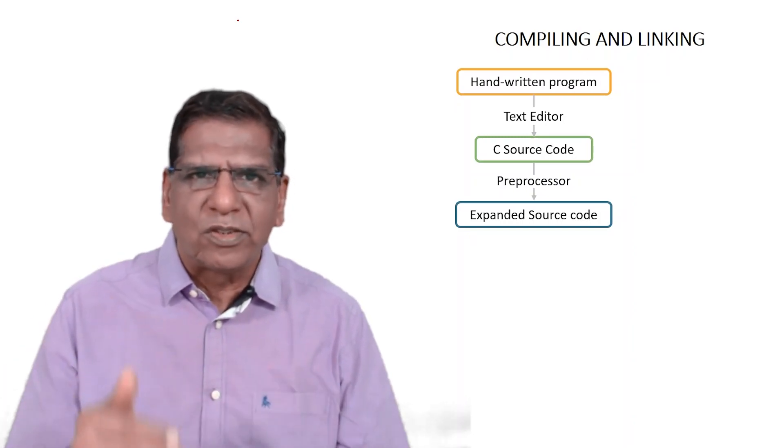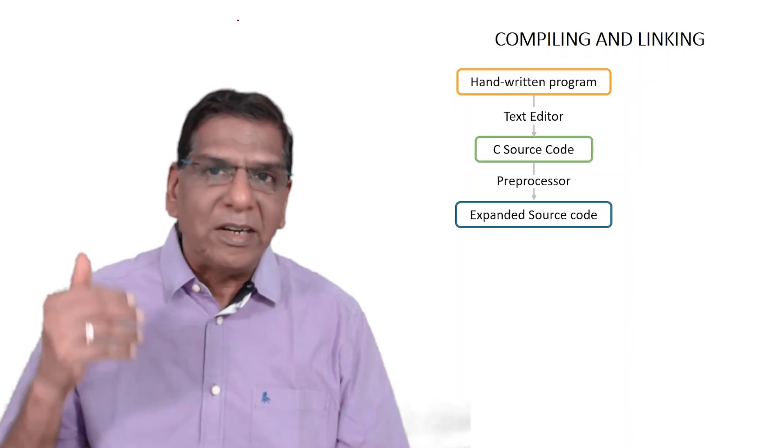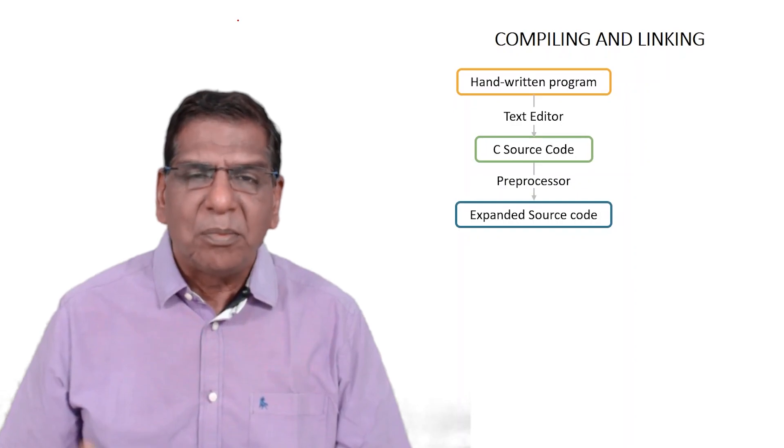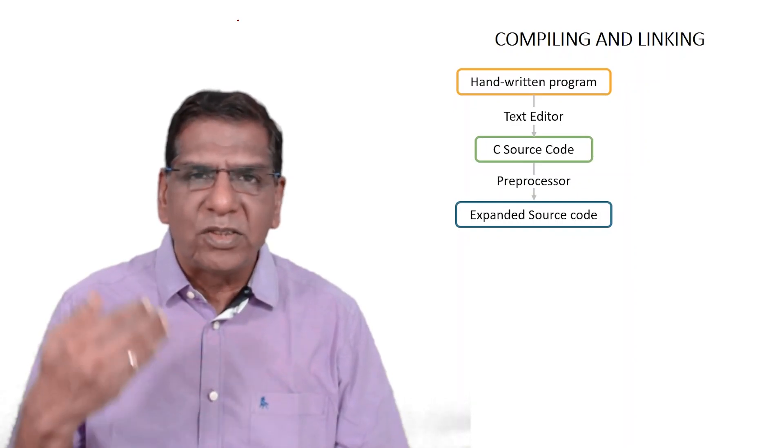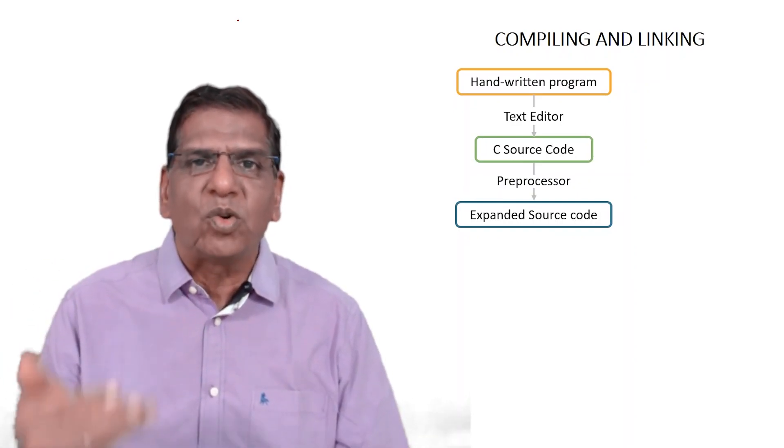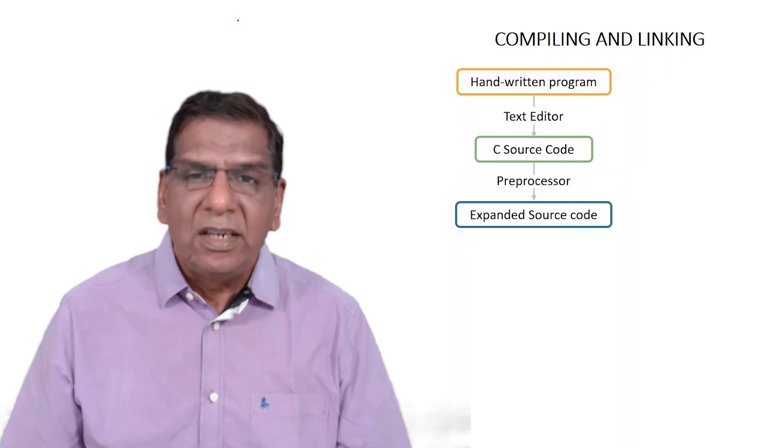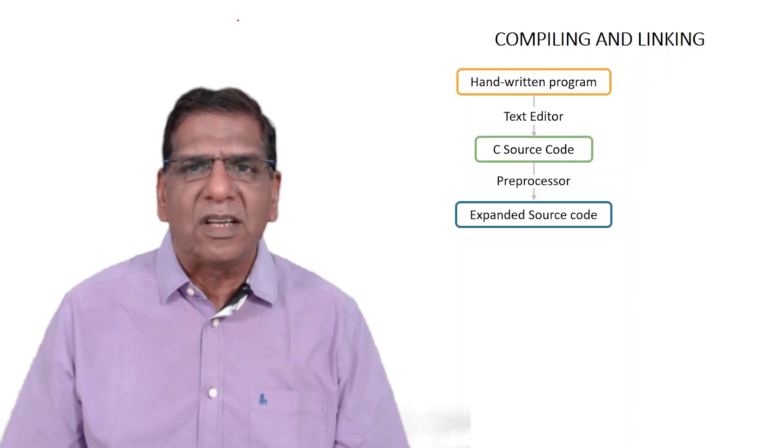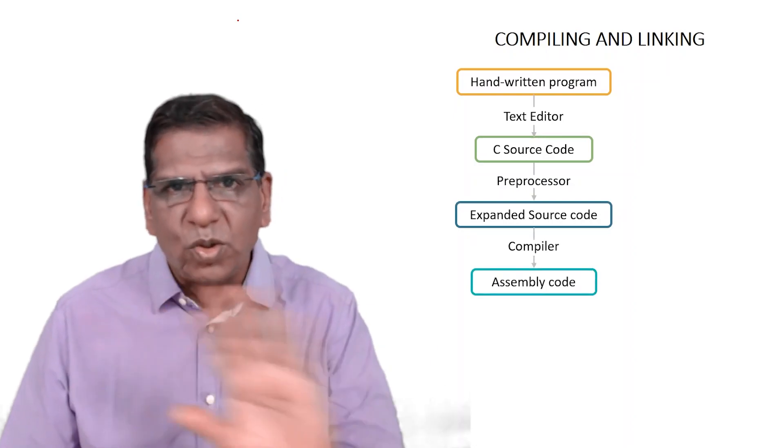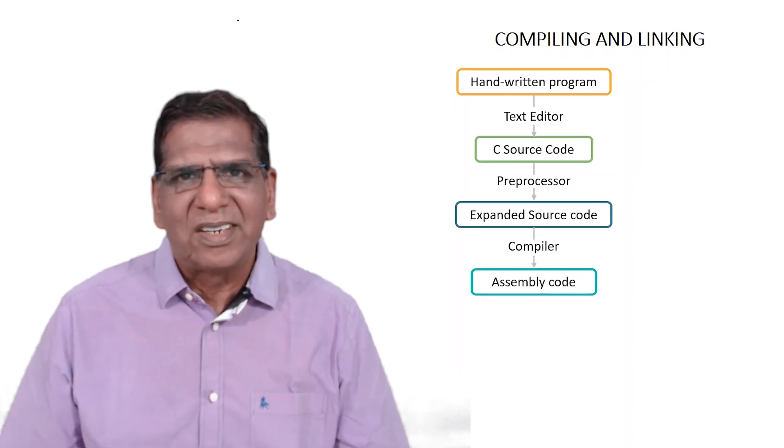What does the pre-processor do? It takes input as your C source code and expands upon it. Based on the pre-processor directives that you may have used within the program, your code will get expanded. It is this expanded code which is handed over to the compiler. Your source code is never handed over. Expanded source code is given to the compiler.